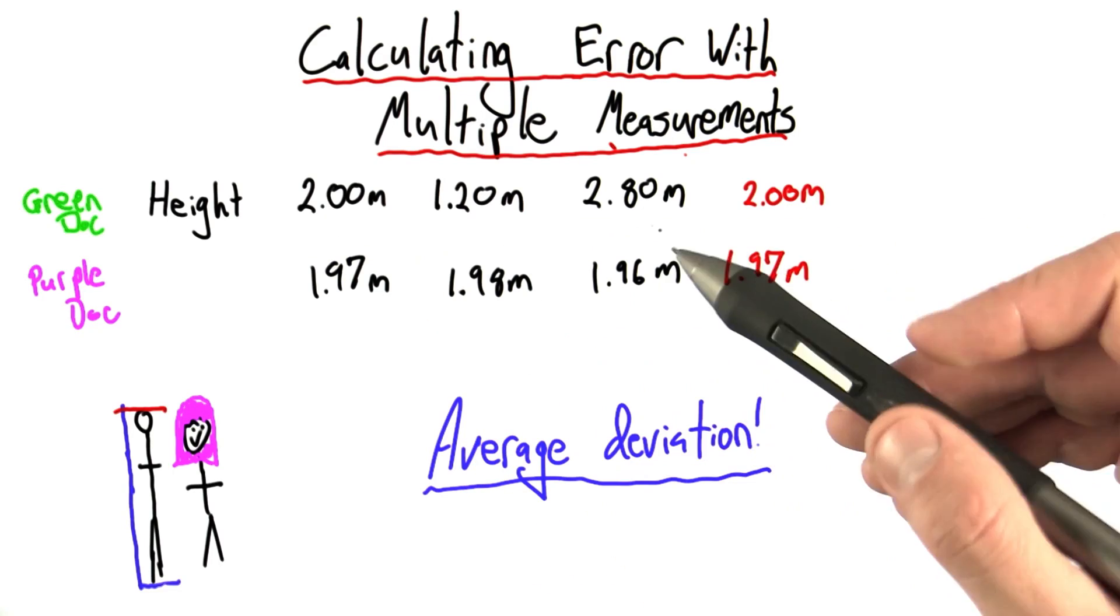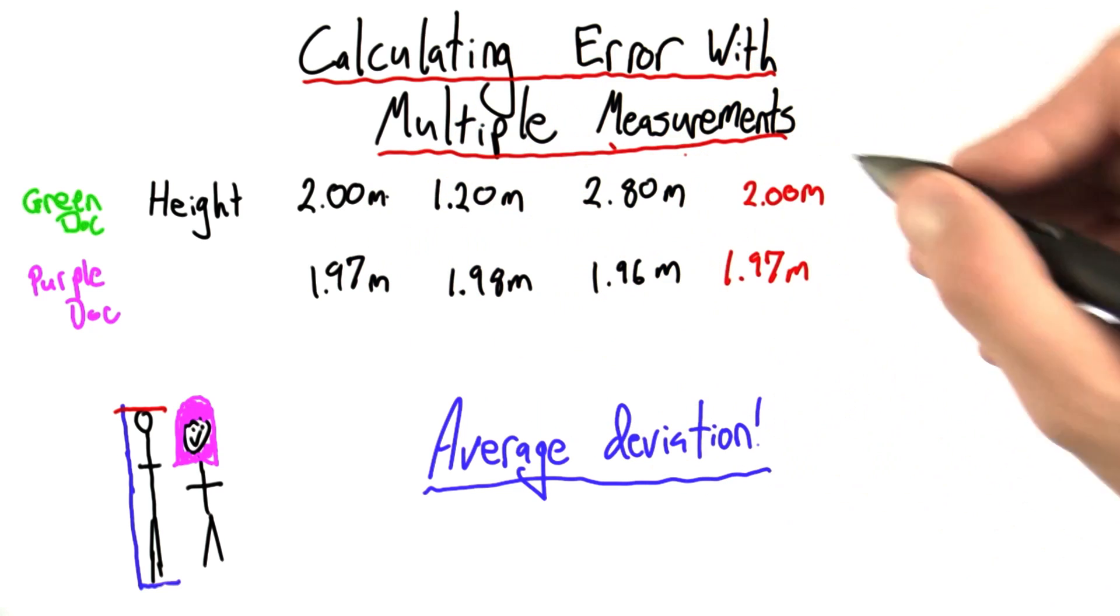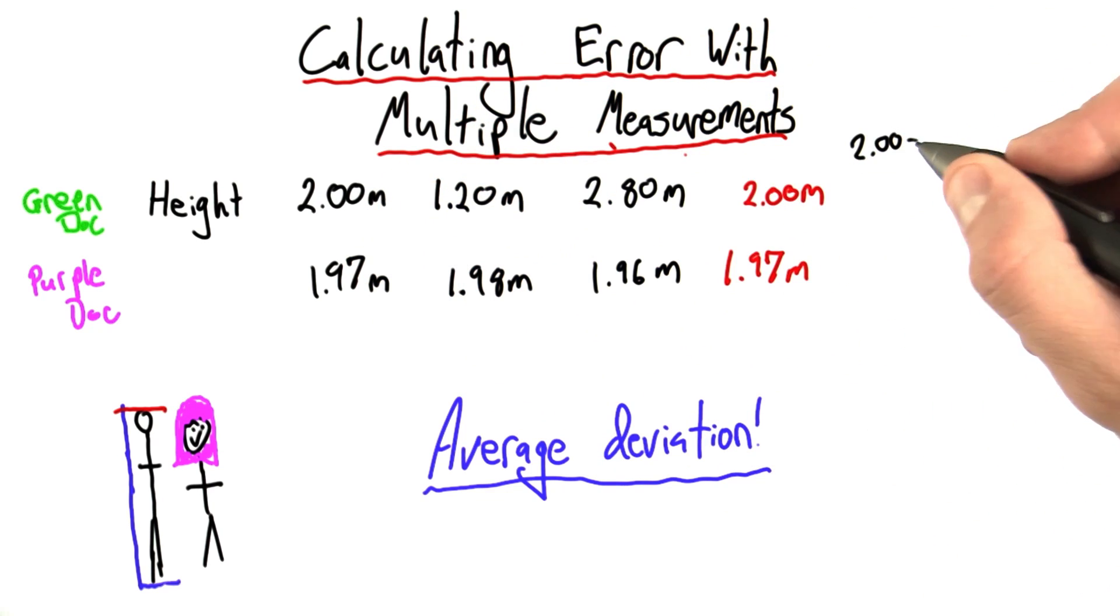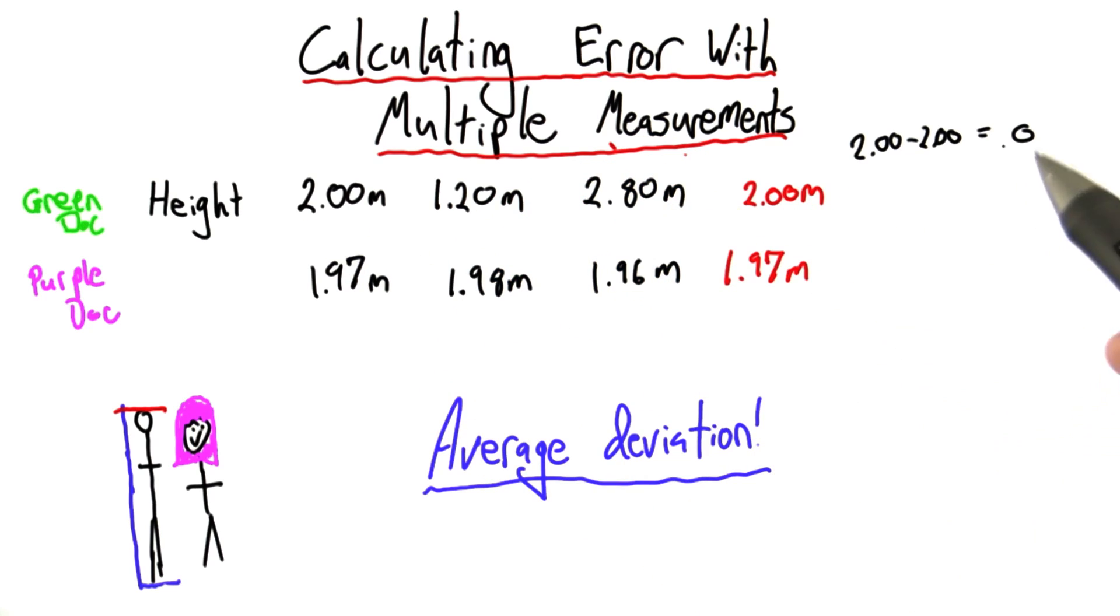For the first doctor, we have three data points. Data point 1, its observed value is 2.00, and the mean was 2.00, so that's actually a distance of 0 from the mean. The absolute deviation of this number, this observation, was 0.